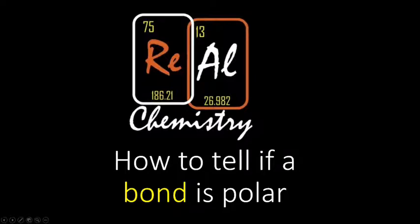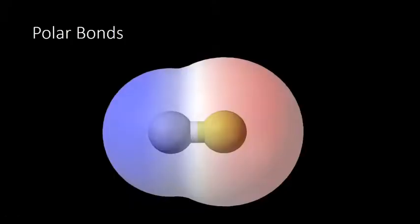So what does it mean for a bond to be polar? Here I have a molecule shown — it's hydrogen bonded to fluorine. Remember that bonds, that little line I drew, represent electrons that are holding our atoms together. Those electrons are shared in the case of a covalent bond, but they can be shared equally — that is, hydrogen and fluorine both have about the same amount — or unequally.